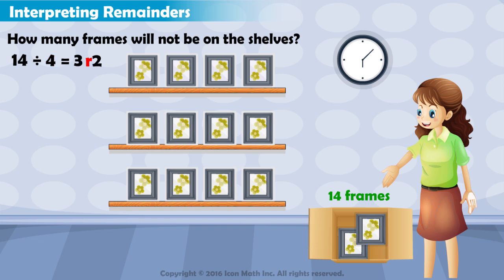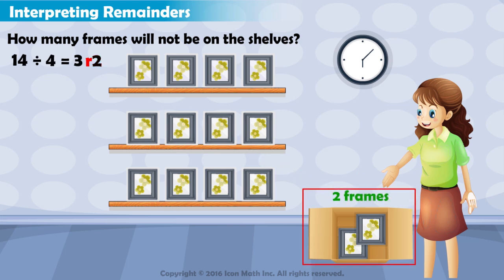But the question is not asking for how many shelves Diana will have. It is asking us to determine how many picture frames will not be on the shelves. Notice that the remainder is 2, so there are 2 picture frames left over. So the number of picture frames that will not be on the shelves is 2.